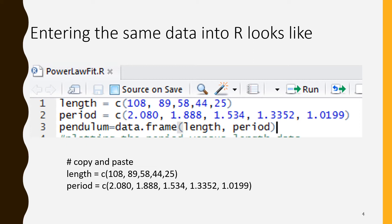In line two we are creating a period vector with five values. Then in three we are creating from those two vectors a data frame. The data frame brings those two vectors together and makes them one larger unit called a data frame.